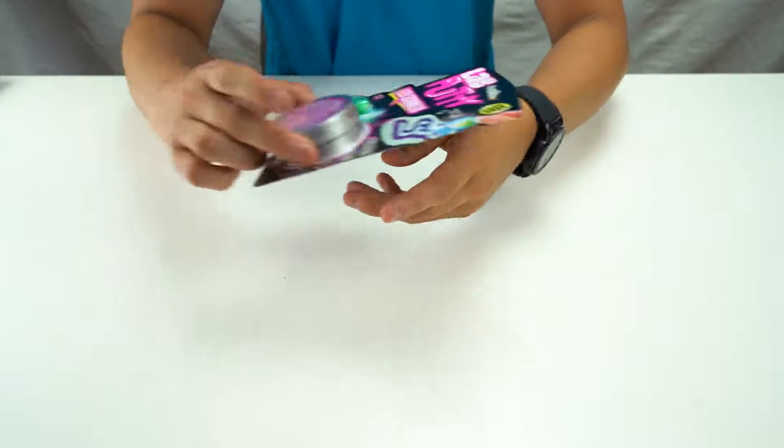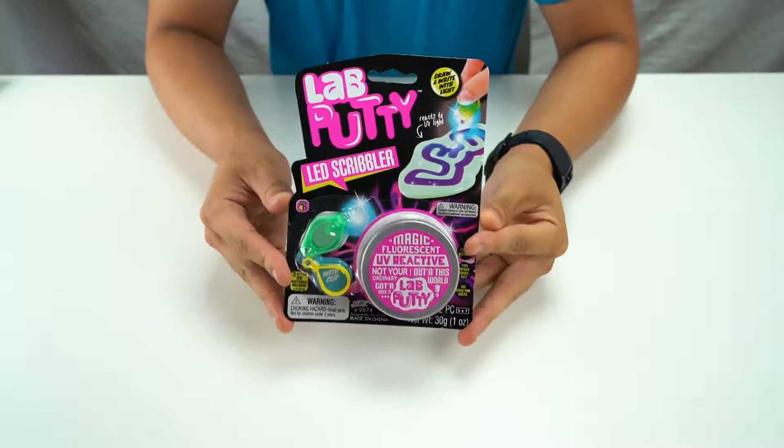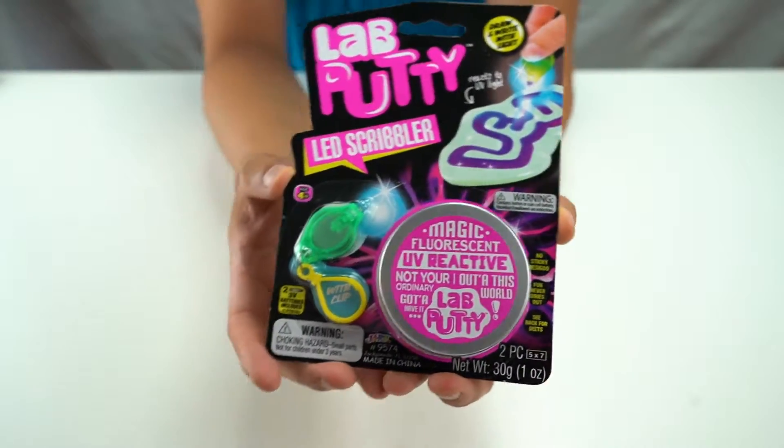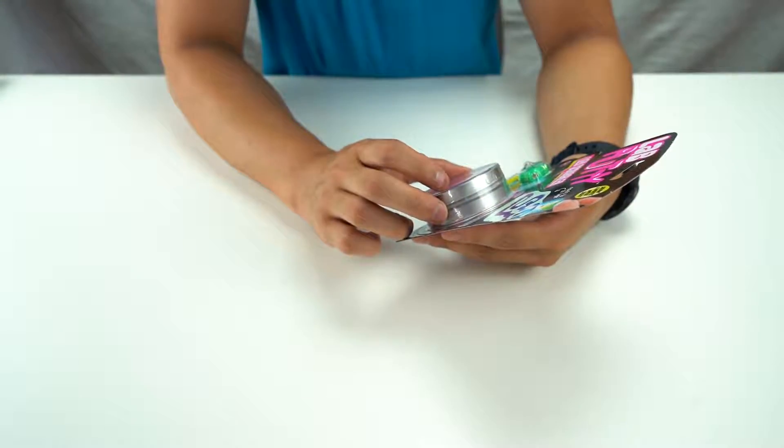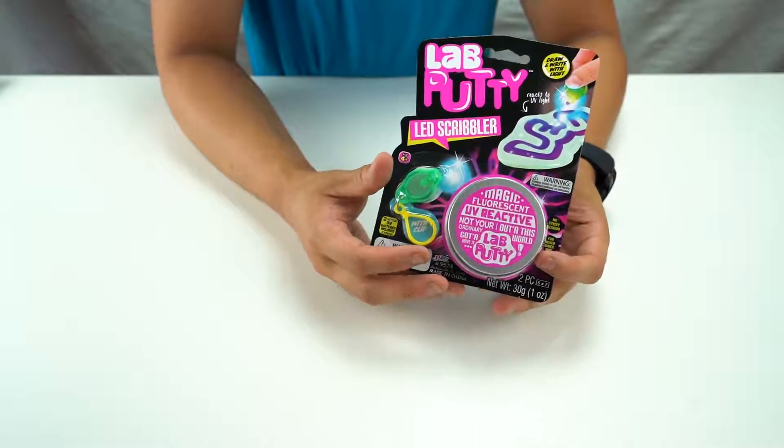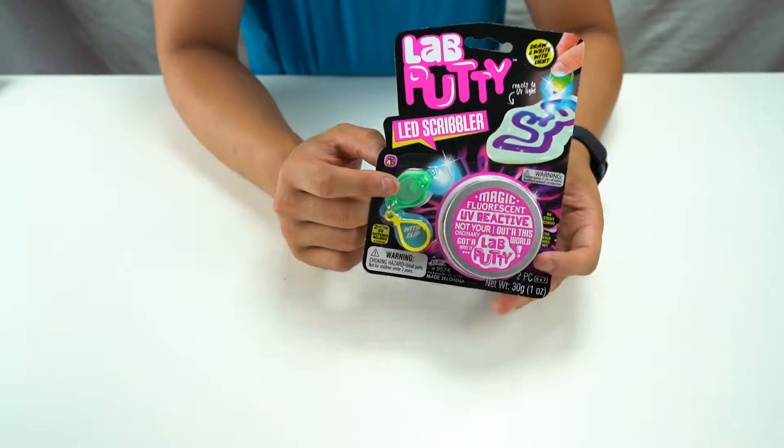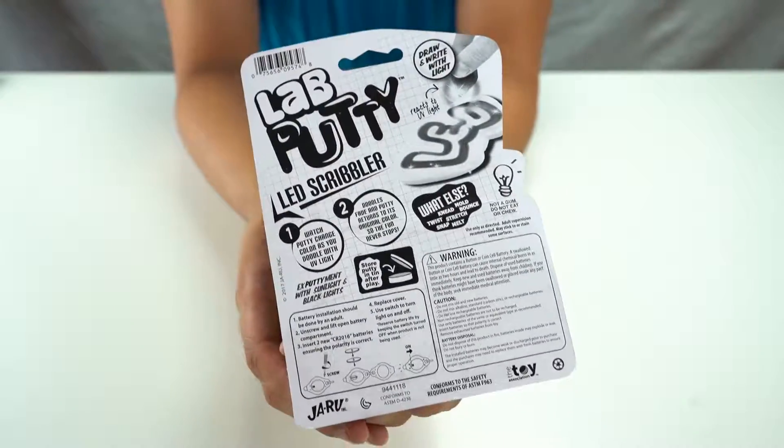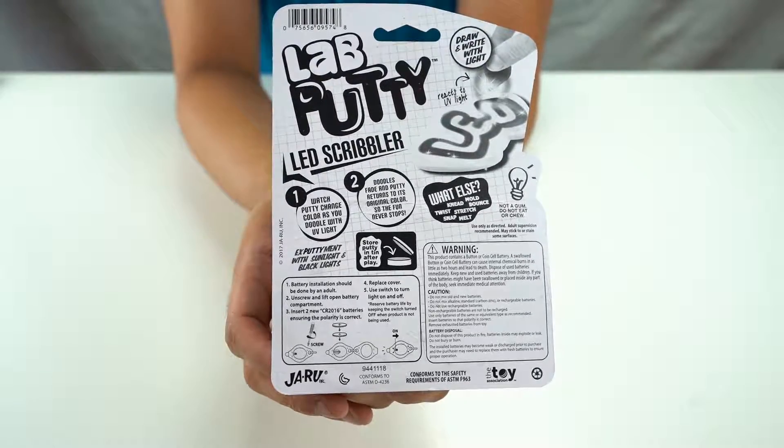All right everyone, today we are looking at Lab Putty LED Scribbler. Let's see some more putty toys that we're playing with. Apparently the putty reacts to LED light, so we can use this light and draw on the putty. There's the back of the packaging of course.